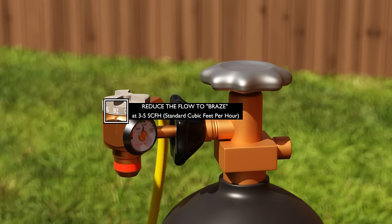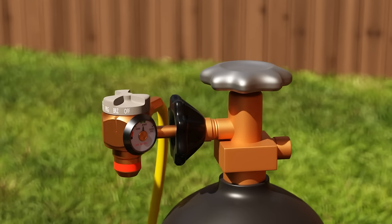Some nitrogen regulators, like the Western Enterprises regulator on this tank, have preset flow modes with a gauge to show you how many SCFH you're releasing from the tank. If you don't have a flow regulator, you can instead set a regular nitrogen regulator T-handle to a point where it's just barely whispering a flow of nitrogen. 3 to 5 SCFH is a tiny, almost imperceptible amount of flow.